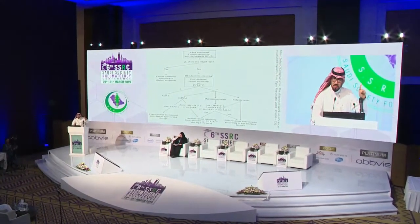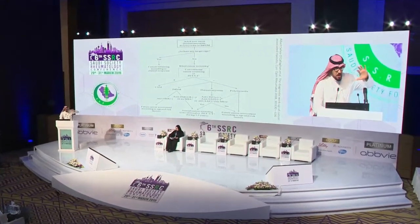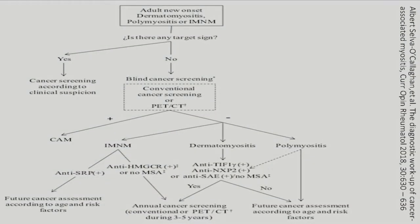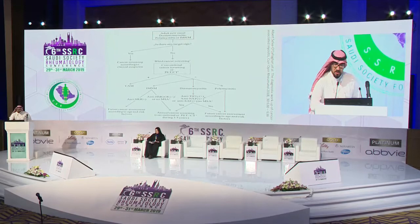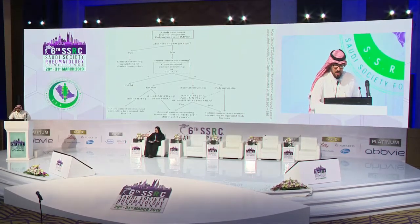After initial blind screening, if nothing is found, the next step is to check antibodies. For polymyositis and dermatomyositis: if anti-TIF1-gamma, anti-NXP2, anti-SAE, or negative myositis-specific antibody, annual screening is required. If negative anti-TIF1, NXP2, or SAE with positive myositis-specific antibody, screening is done according to age and risk. For necrotizing autoimmune myopathy with positive anti-SRP, screening follows age and risk. If anti-HMGCR positive or seronegative necrotizing autoimmune myopathy, annual screening is required.